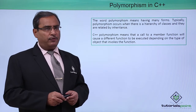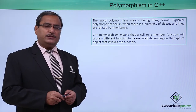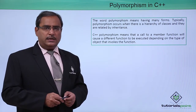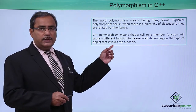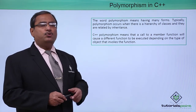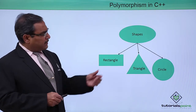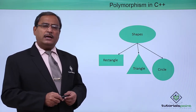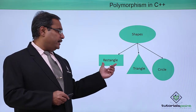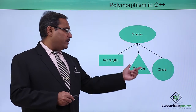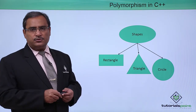Polymorphism naturally occurs in the case of inheritance, so to have a better idea on this, we shall go through some examples. Let us suppose there is one class — the name of the class is Shapes. From this class we have inherited Rectangle, from this class we have inherited Triangle and Circle, and so on.